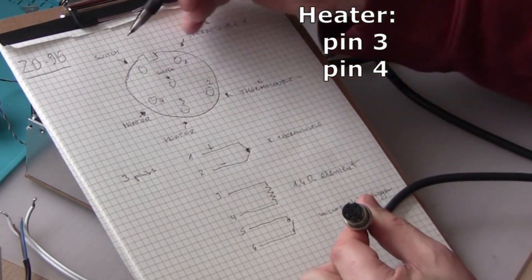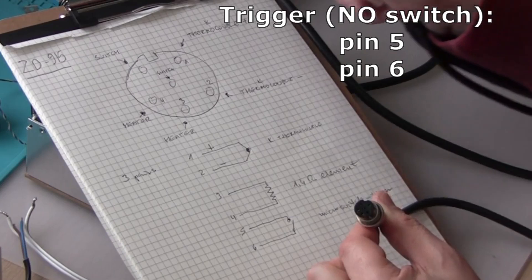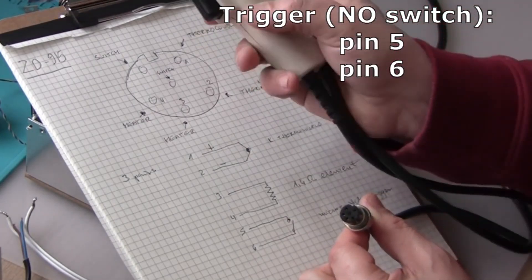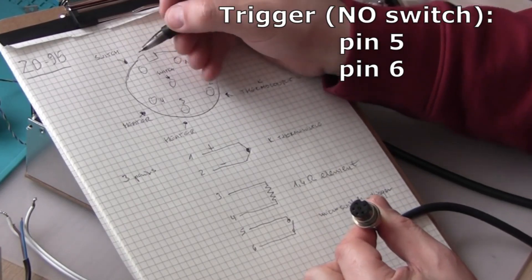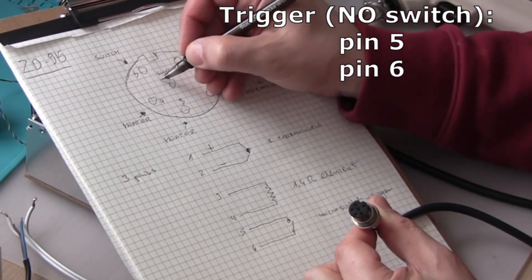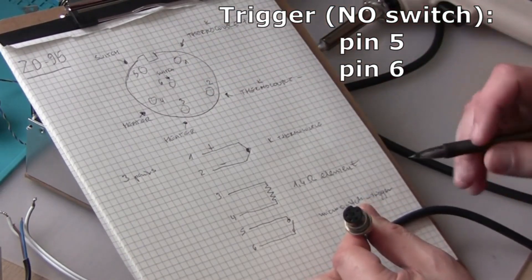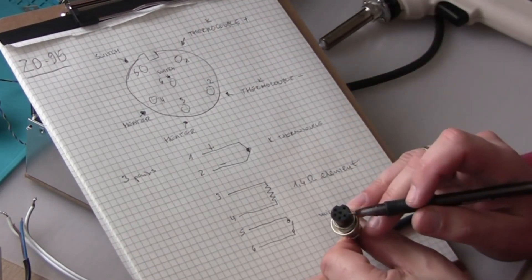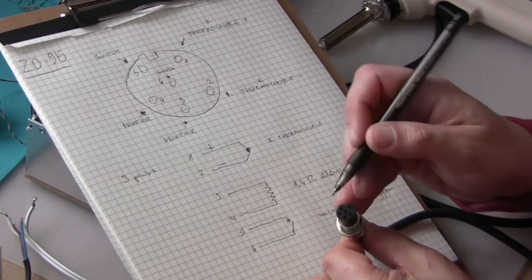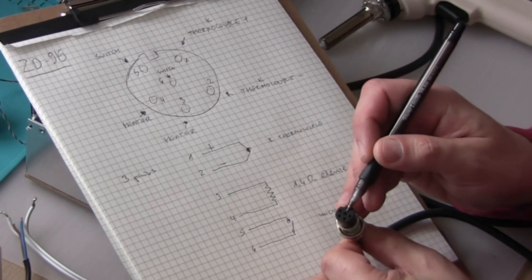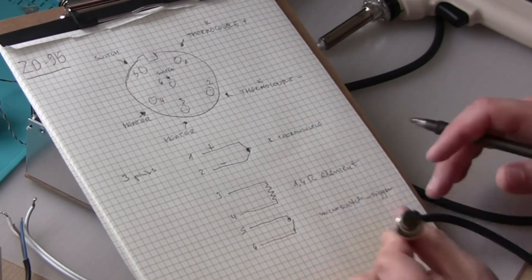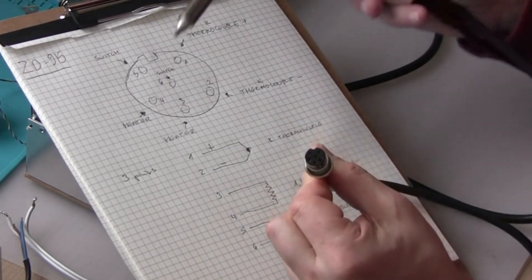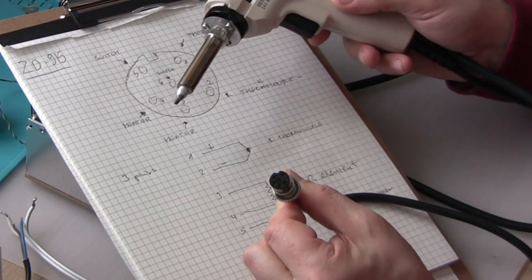And then we have a switch. This trigger is basically a micro switch that is inside, and it is on pins five and six. So thermocouple, heater, and switch on the central pin and pin number five. That's essentially what's going on in here.